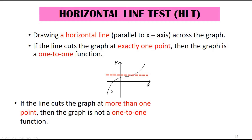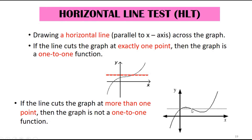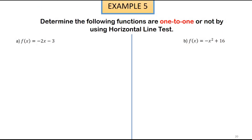As you can see from this drawing, we have a graph and we draw a horizontal line — it cuts at only one point, so this is a one-to-one function graph. If the line cuts the graph at more than one point, then the graph is not a one-to-one function. For example, here we have more than one intersection point — one, two, and three. Now let's look at Example 5: determine whether the following functions are one-to-one or not.